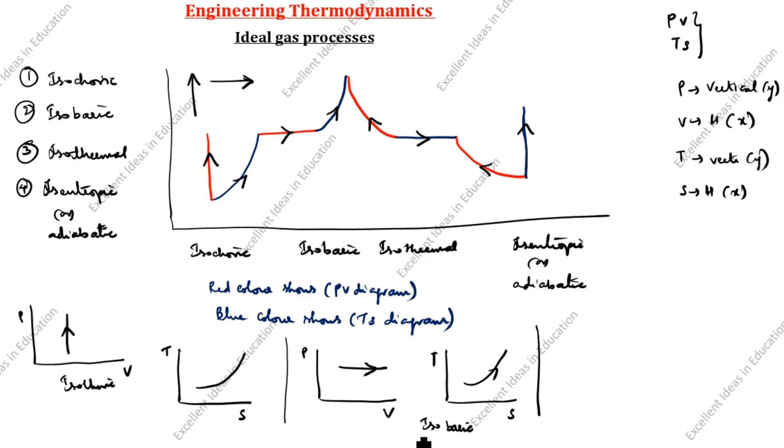Now we will see the combined gas law equation. The combined gas law equation is: P1 V1 divided by T1 equals P2 V2 divided by T2.